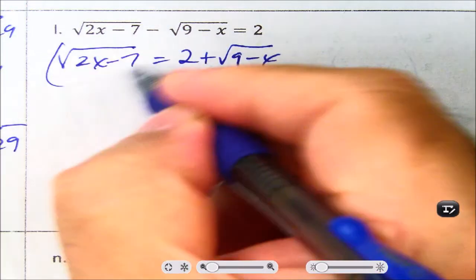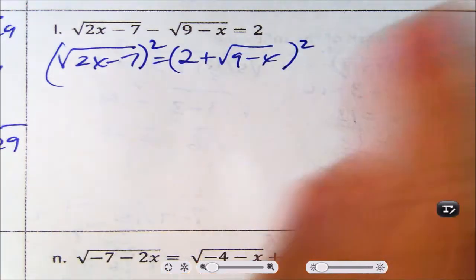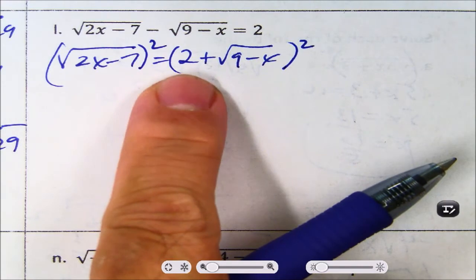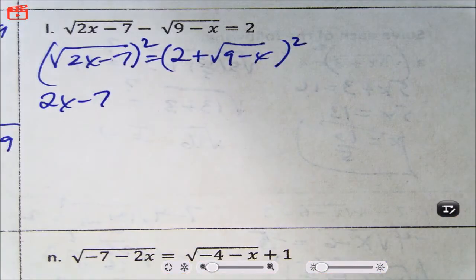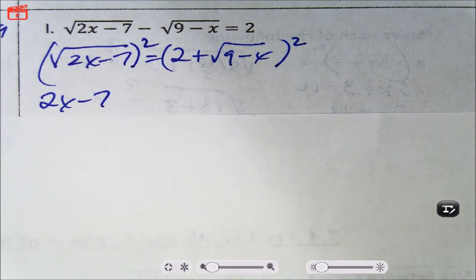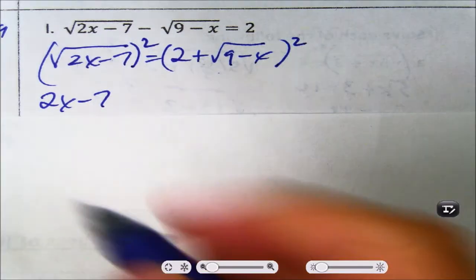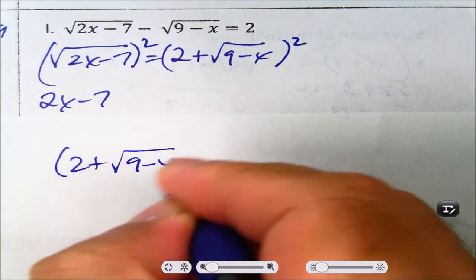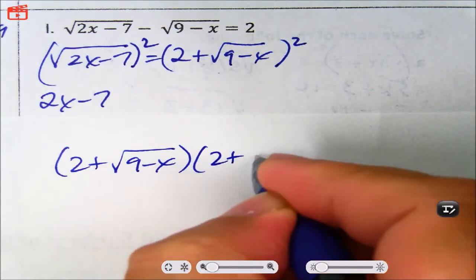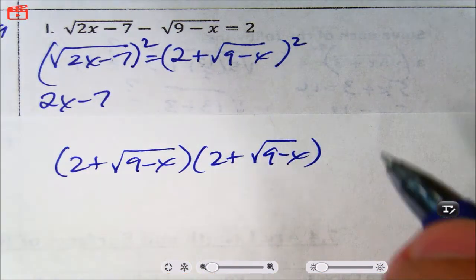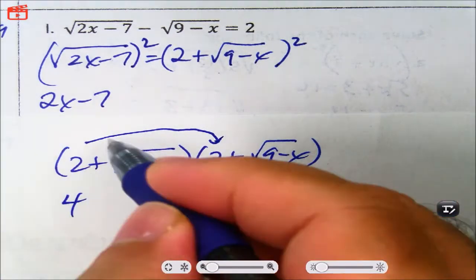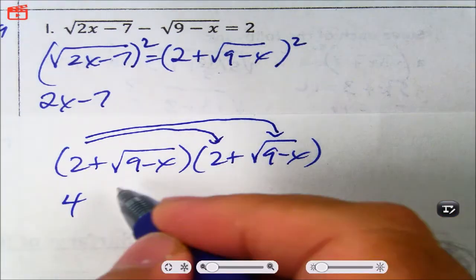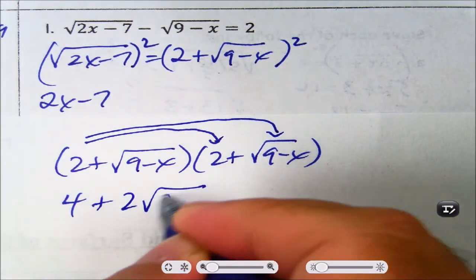We're going to square both sides. This is not going to be pretty because we're squaring essentially a binomial. So that's 2x minus 7 on the left. For the other side, let's do some side work. So this means I'm going to take 2 plus the square root of 9 minus x and multiply by itself. So 2 times 2 makes 4, and then 2 times that entire radical makes 2 root 9 minus x.